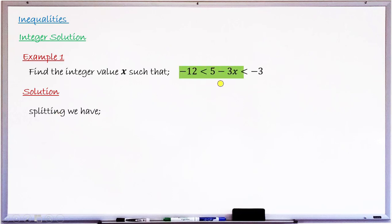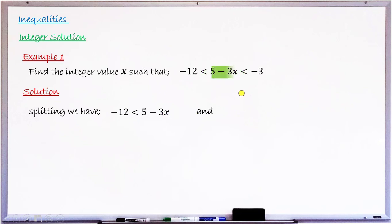Splitting this compound inequality into two separate simple inequalities: the first is minus 2 less than 5 minus 3x, and the second is 5 minus 3x less than minus 3. It is these two simple inequalities that I am going to solve separately.